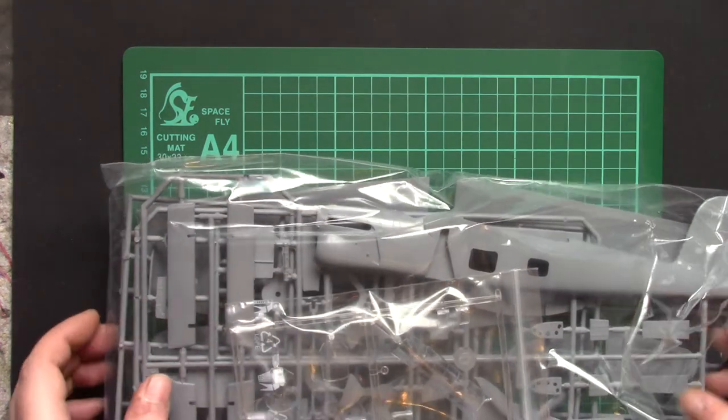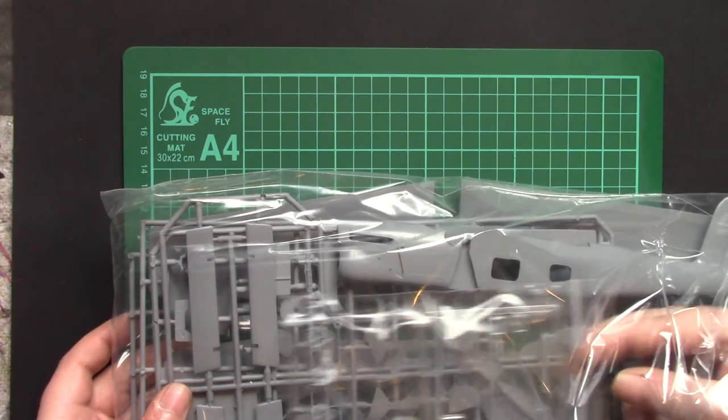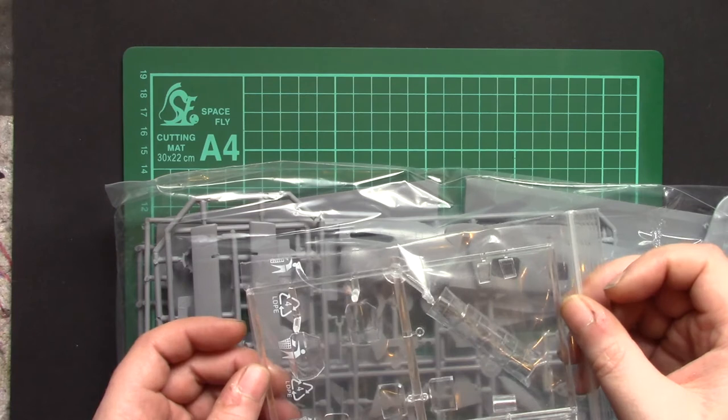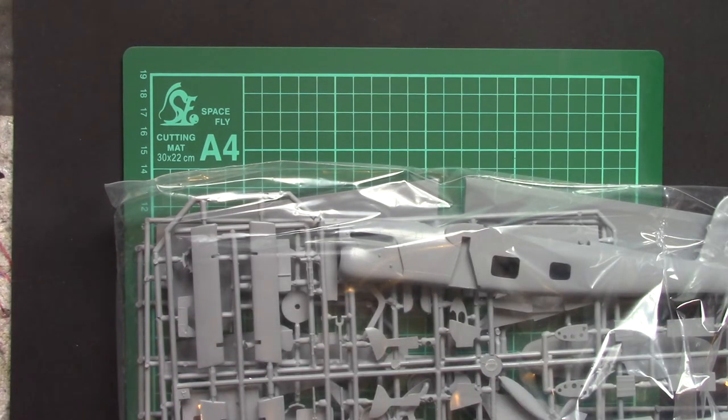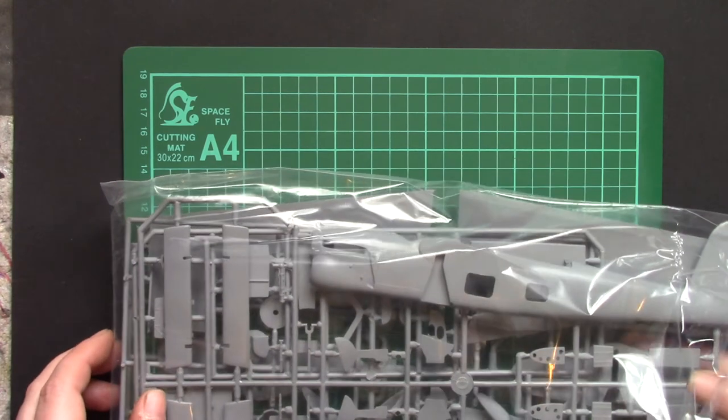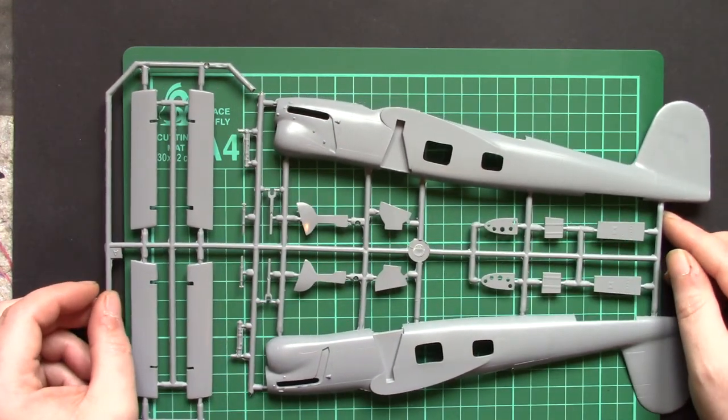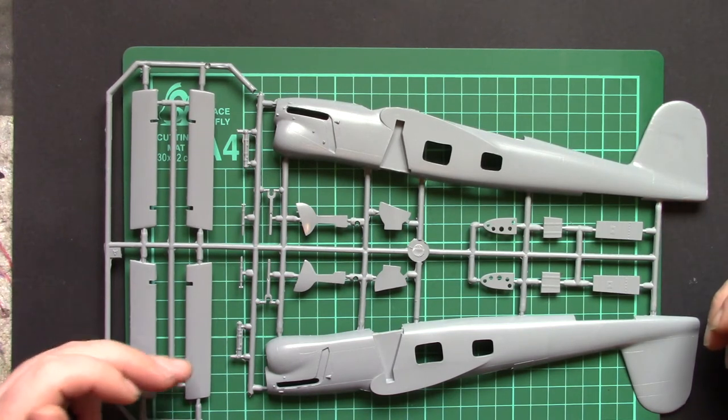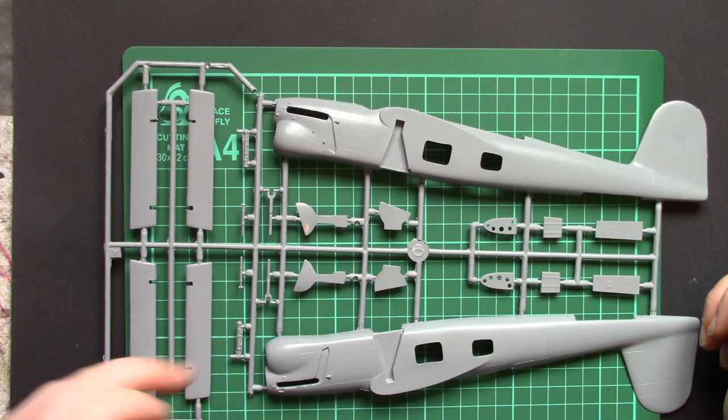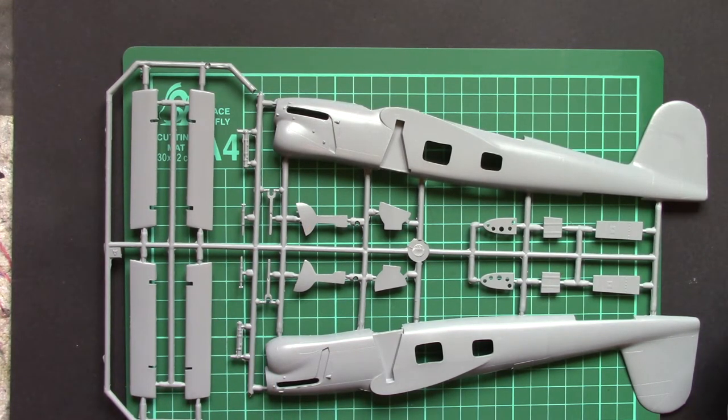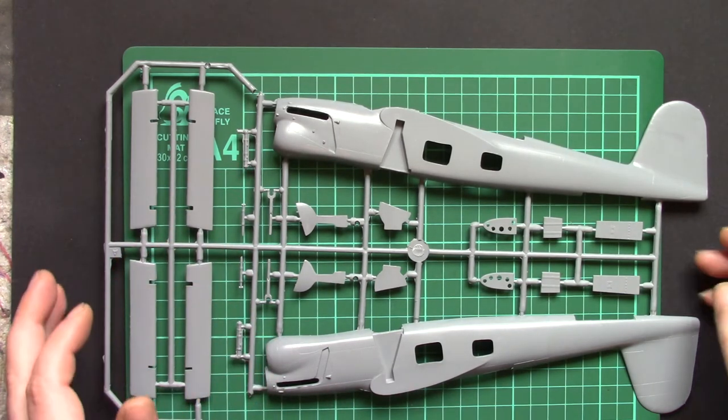Now all the sprues other than the clear parts come in the one bag and the clear parts come in a little ziplock baggie. Keep them safe and also means you can easily reseal it and keep them safe from scratching as you progress through your build. So, there's not a lot of plastic with this. Let's start with the first main sprue, which is the fuselage and the flaps, landing gear legs, or covers, main gear and a few other little bits and pieces.